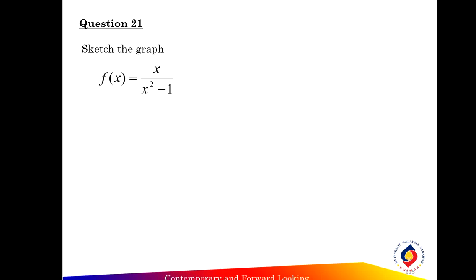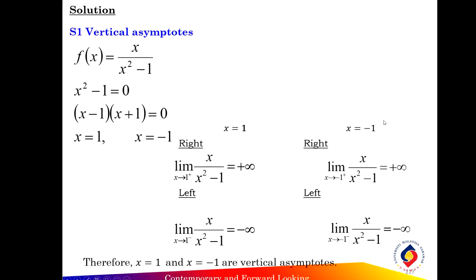Question 21: Sketch the graph of the rational function f(x) = x over x squared minus 1. So the first step before you sketch the graph of the rational function, find the vertical asymptote of the rational function using the infinite limit method.